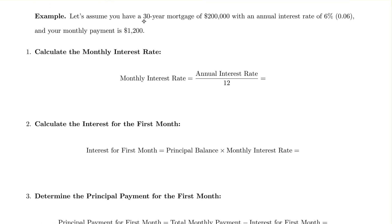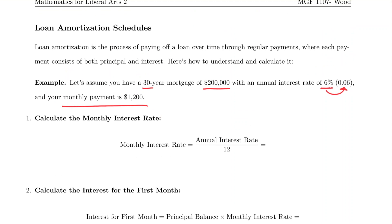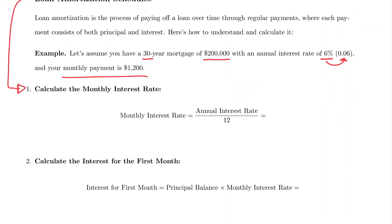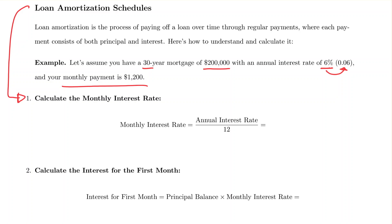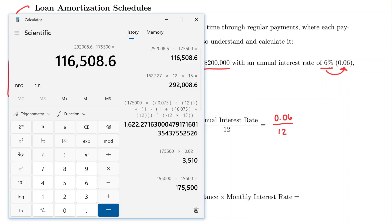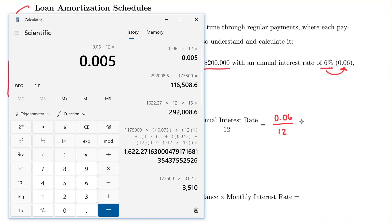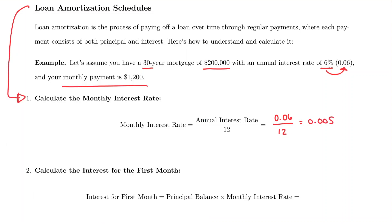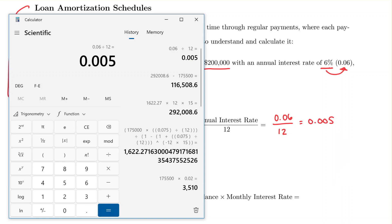Let's calculate a loan amortization schedule. Assume a 30-year mortgage with a loan value of $200,000, an interest rate of 6% (0.06 as a decimal), and a monthly payment of $1,200. Step one: calculate the monthly interest rate by dividing the annual rate by 12. Using the calculator, our monthly interest rate is 0.005 per month.